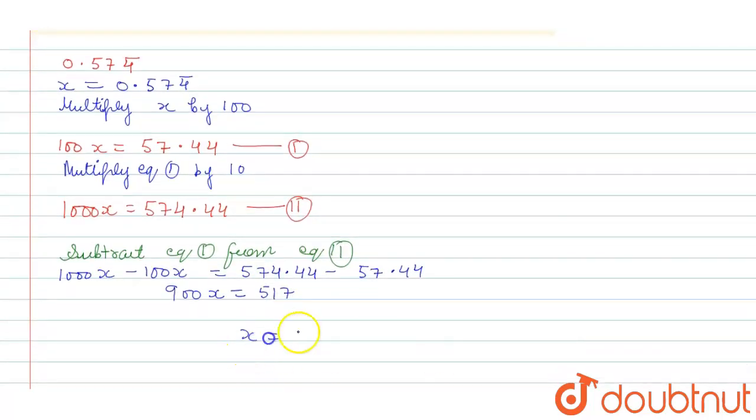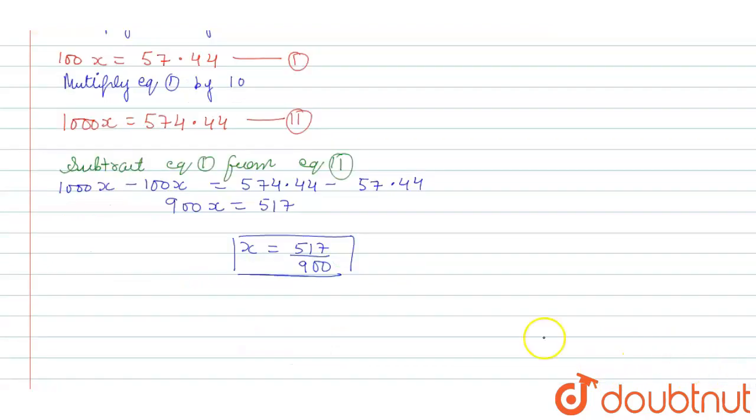So x equals 517 by 900. Therefore, 0.574 bar in fraction can be written as 517 by 900. Thank you.